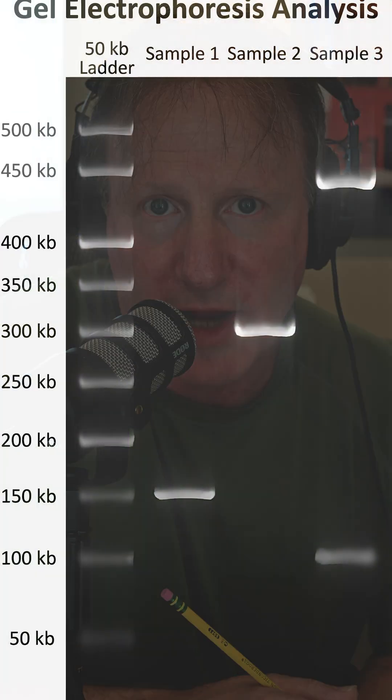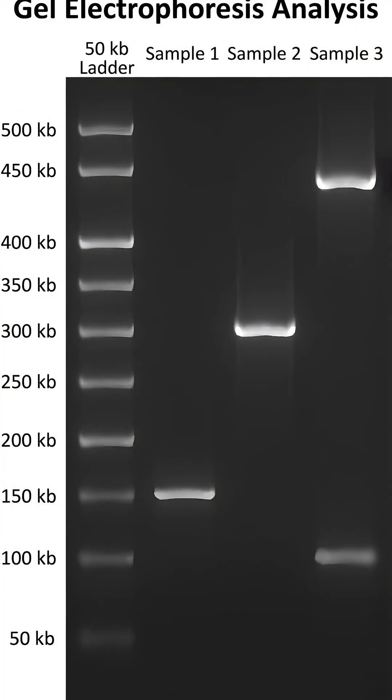When you were done and you turned off the electricity, you could examine where the bars landed. If you had a bar that landed next to the seventh bar on the ladder, then you know that your sample was approximately 350 kilobase pairs. It turns out that the size is not only a characteristic, but an identifying property, and that's how we were able to identify the nature of the DNA.